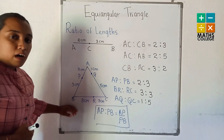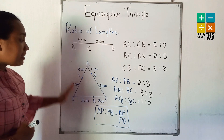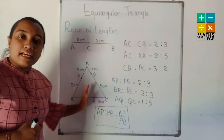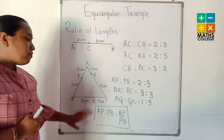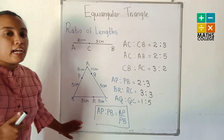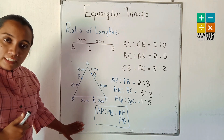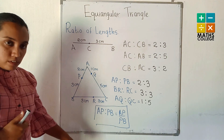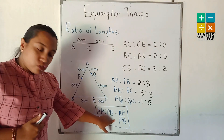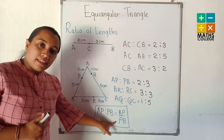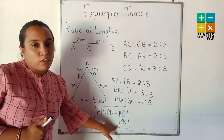Now you have learned how to write the ratio when the length is given. You already know that if the ratio is given, it can also be written as a fraction. For example, AP to PB can be written as AP divided by PB — the second term goes to the denominator of the fraction.